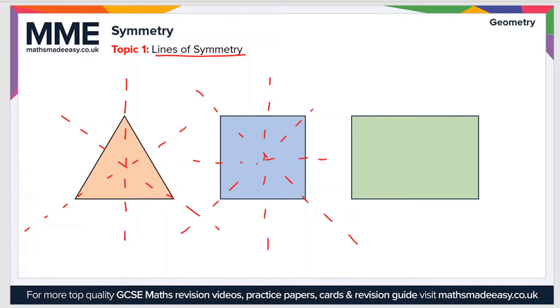Finally, for a rectangle, this isn't a regular shape so there aren't four lines of symmetry, but there are still two lines of symmetry going through each of the two sides like so.